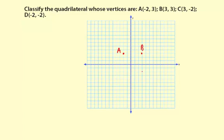C is at (3, -2). And then D is at (-2, -2).